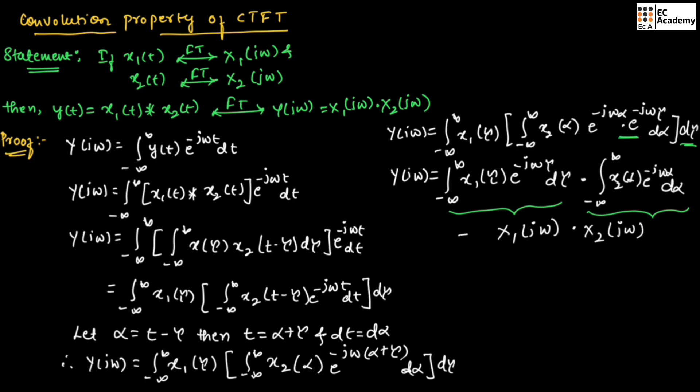This is nothing but y of j-omega equal to X1 of j-omega into X2 of j-omega. So, this completes the proof. I hope you have understood this topic. Thank you.